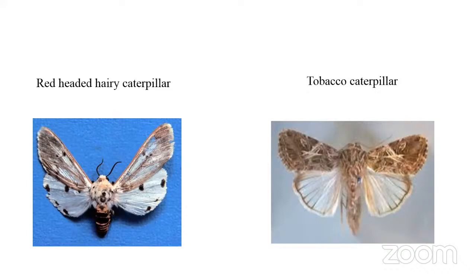The red-headed hairy caterpillar and the tobacco caterpillar also attack this crop. The scientific name of the red hairy caterpillar is Amsacta albistriga.